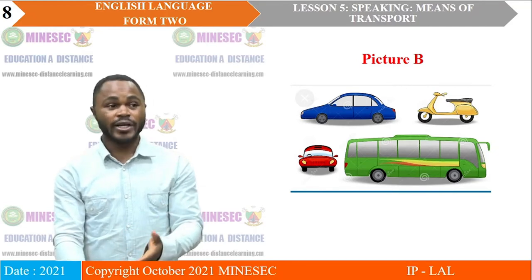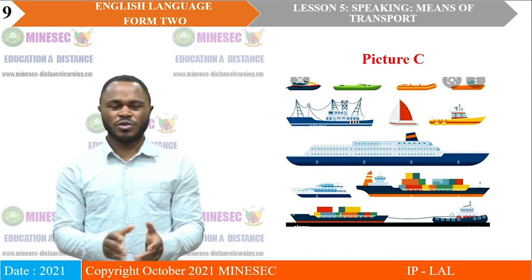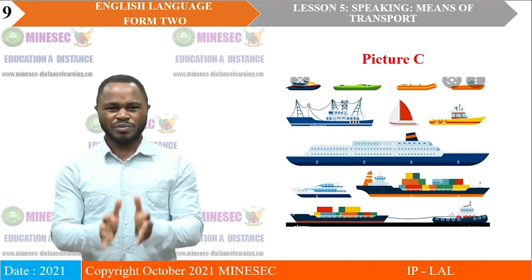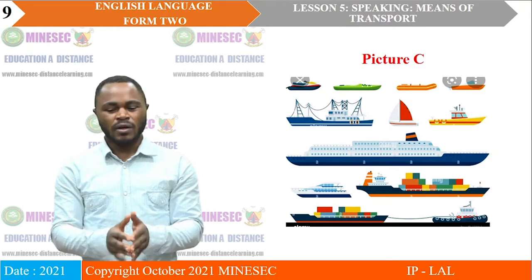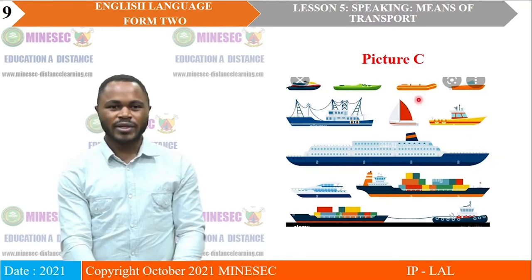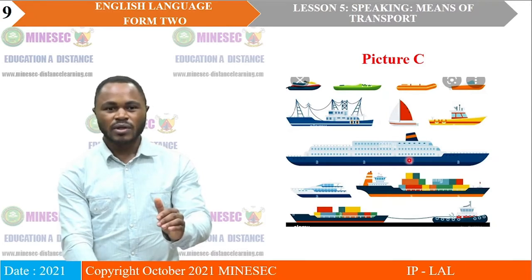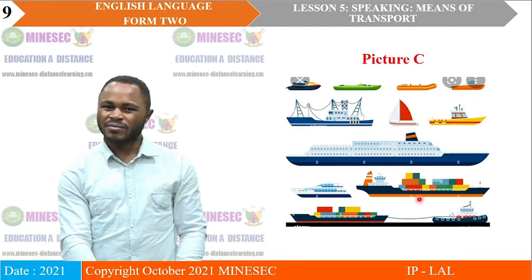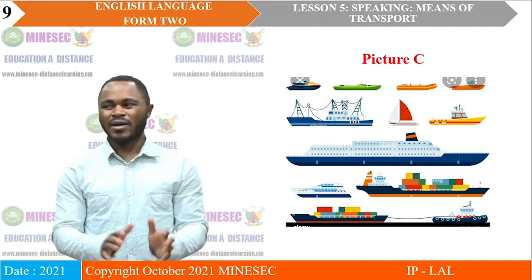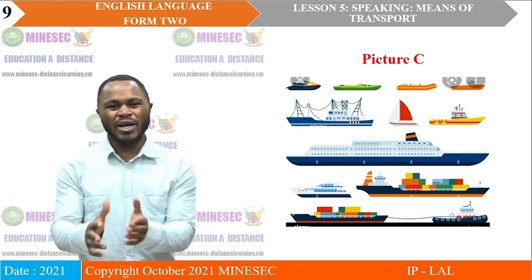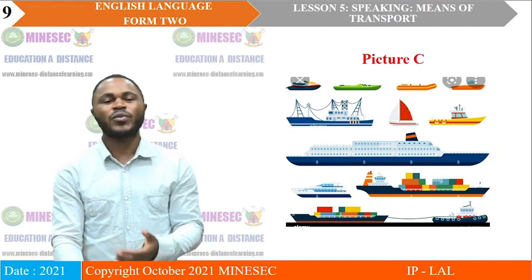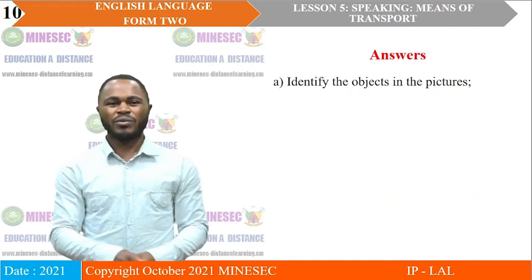Moving on to picture C — picture C shows a whole number of objects. Some appear to be pretty large and some appear meant to carry cargo. Some are pretty small, one seems to have different levels, and one down below seems like it is meant to carry not people but containers. They all apparently have similar uses. What are they? Where are they used? Where specifically can we find them?